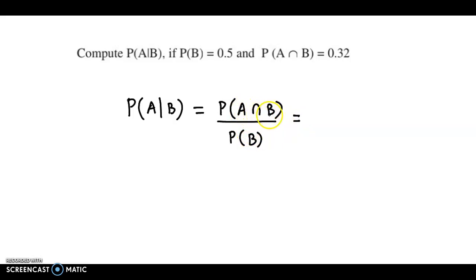Now A intersection B probability is 0.32 and B probability is 0.5. This could be written as 0.50. So further if we simplify, we get 32 upon 50.